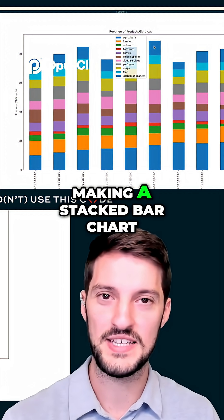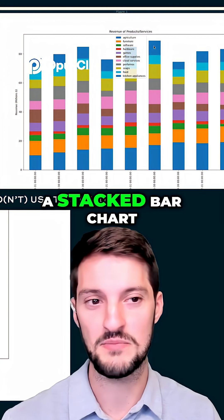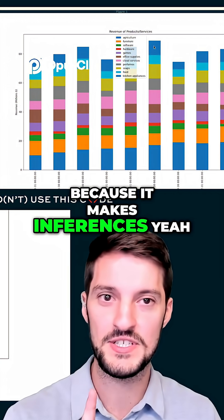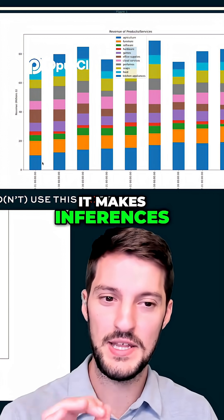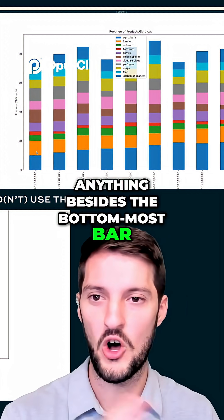Whenever you're making a stacked bar chart - which I would probably just recommend not making - it makes inferences about anything besides the bottommost bar almost impossible.